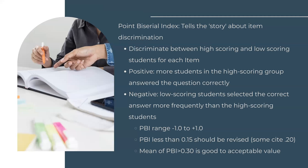Remember that there's both a qualitative and a quantitative component to completing an exam and item analysis. You want to spend time doing a deep dive into the numbers, but also take a general overview of what the exam tells you about students — considering high- and low-performing students and where they scored compared to other exams in your course. The PBI range is between negative 1.0 and positive 1.0.